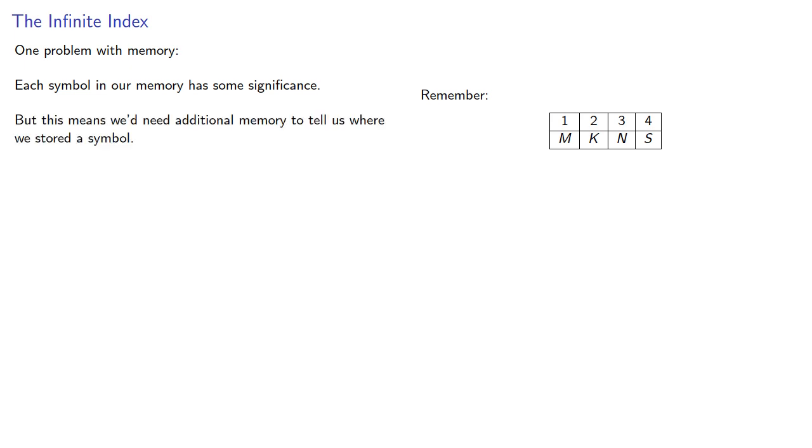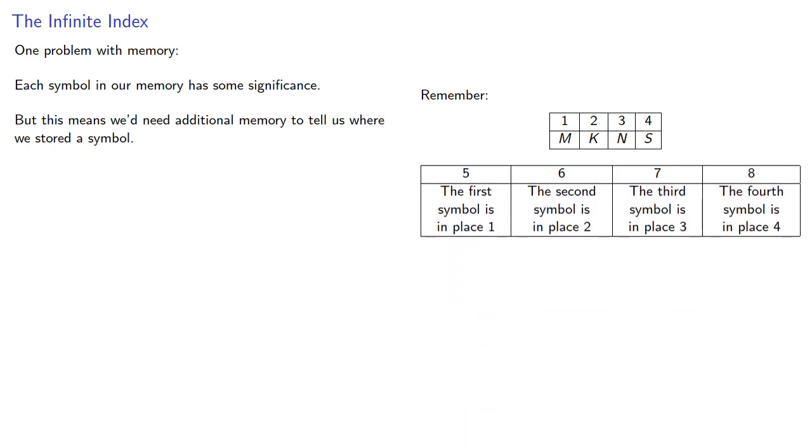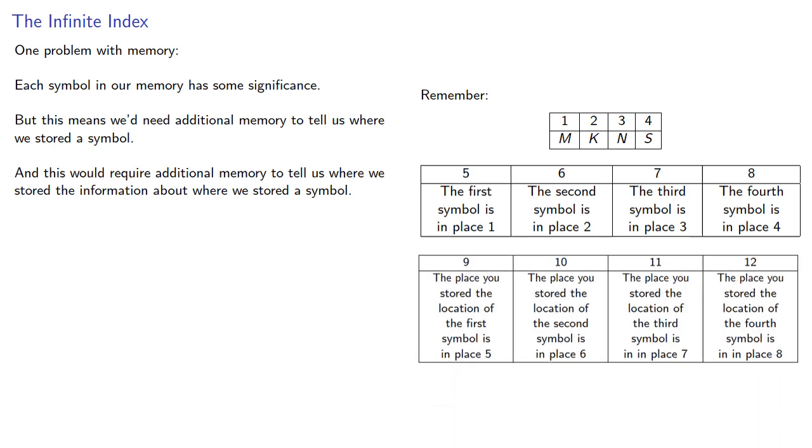But we need additional memory to tell us where we stored the symbol. So we might remember that the first symbol is in place 1, the second symbol is in place 2, and so on. But now this would require additional memory to tell us where we stored the information about where we stored the symbol. And this would then cause a problem.